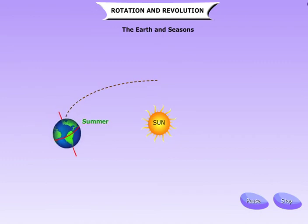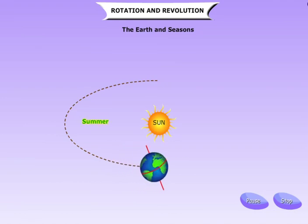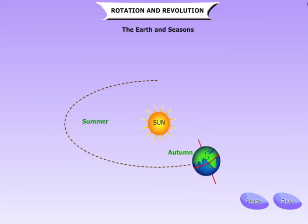When the North Pole is towards the Sun, it is summer in the Northern Hemisphere and winter in the Southern Hemisphere. When the South Pole is towards the Sun, the Northern Hemisphere has winter and the Southern Hemisphere has summer.